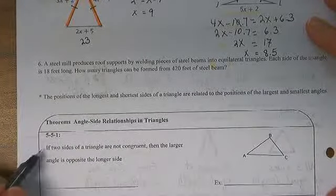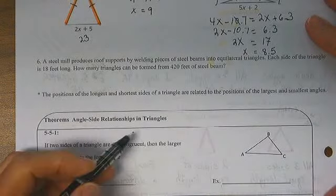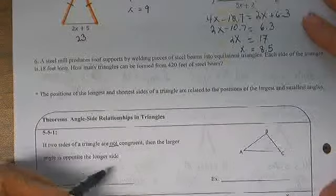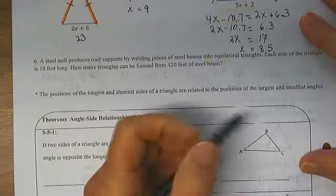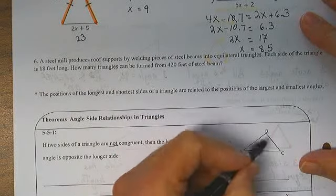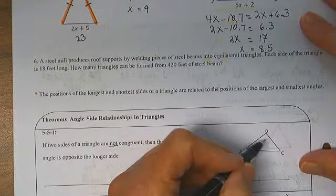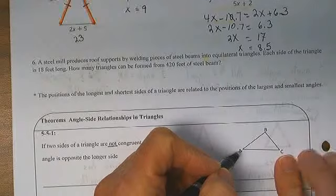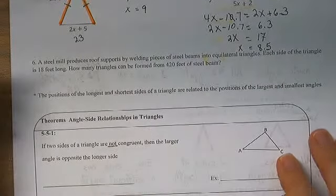If two sides of a triangle are not congruent, the larger angle is opposite the longer side. So for example, in triangle ABC,